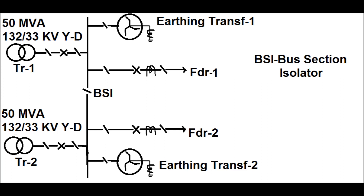Therefore, for artificial neutral earthing, earthing transformers are used. In this diagram there exist two earthing transformers — earthing transformer 1 and earthing transformer 2. There are also two feeders: 33 kV feeder 1 and 33 kV feeder 2. A bus section isolator exists in the 33 kV bus. Feeder 1 and feeder 2 take power from the 33 kV bus, and the bus section isolator is closed. Both 50 MVA transformers supply power from the HV side.